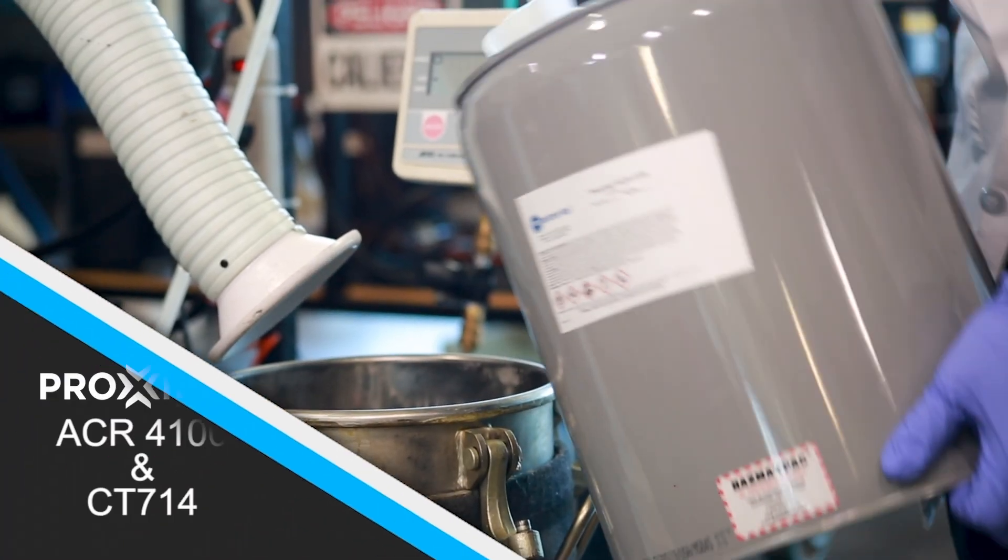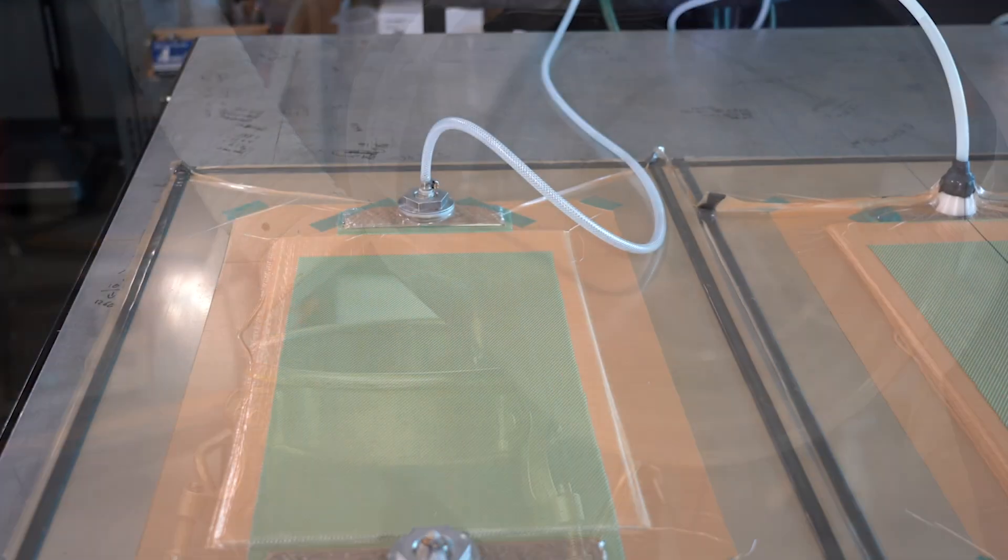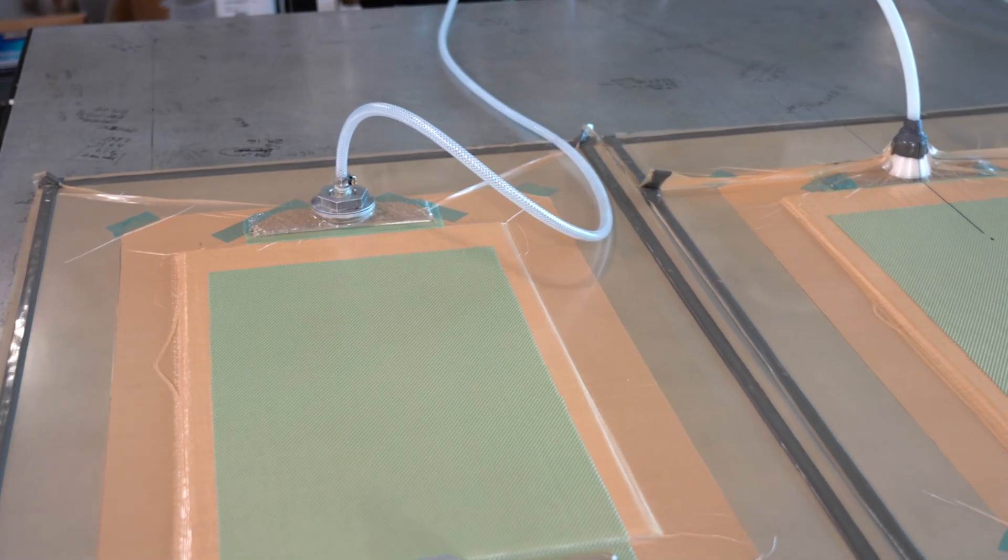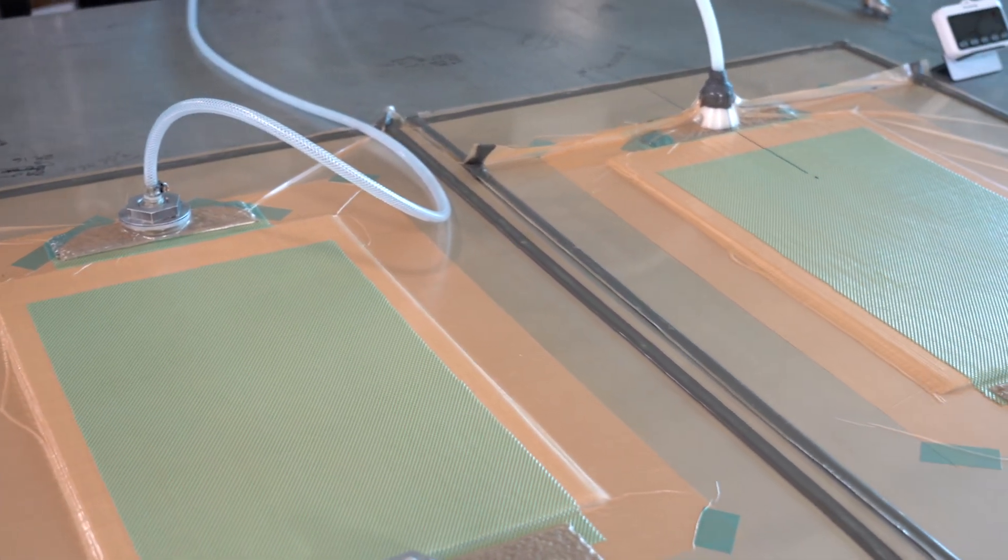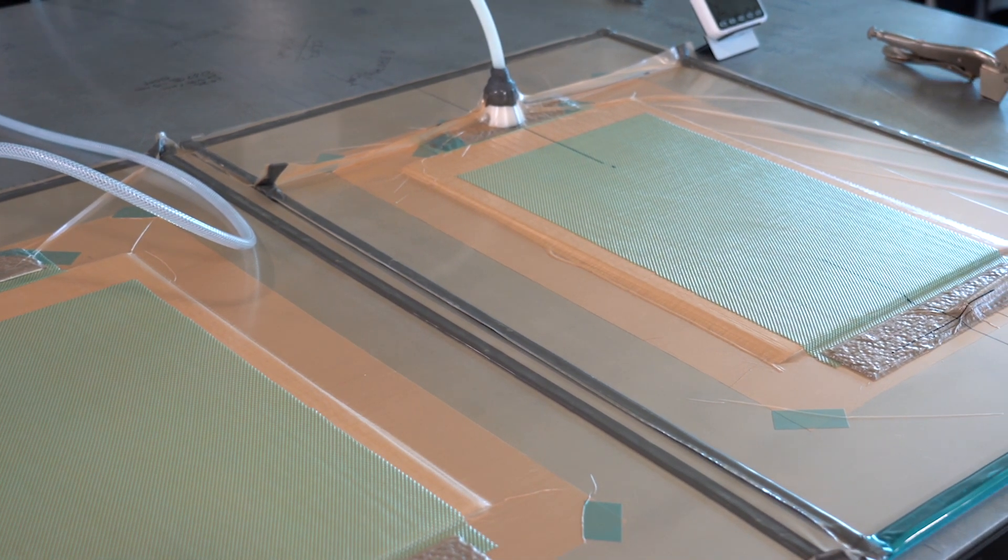We are going to be using ACR4100 and CT714 to infuse a composite panel. The layup includes six plies of 1200 GSM unidirectional fiberglass, approximately 12 inches by 20 inches.